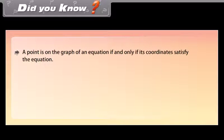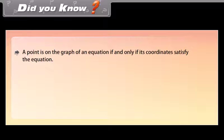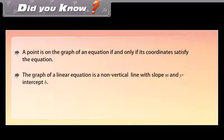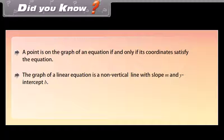Did you know? A point is on the graph of an equation if and only if its coordinates satisfy the equation. The graph of a linear equation is a non-vertical line with slope m and y-intercept b.